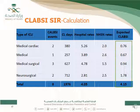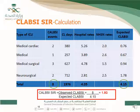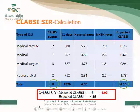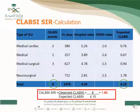Summing the expected events across all four ICUs: 0.76 + 0.67 + 0.94 + 1.78 = 4.15 total expected CLABSI events. The observed events were 2 in medical cardiac, 1 in medical, 3 in medical surgical, and 2 in neurosurgical — totaling 8. Dividing observed 8 by expected 4.15 gives a SIR of 1.93.